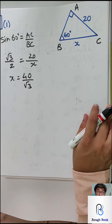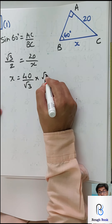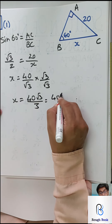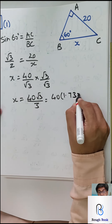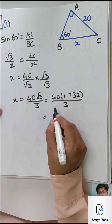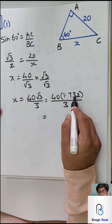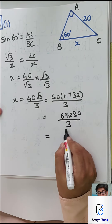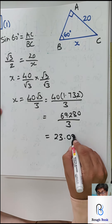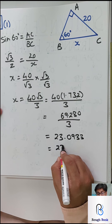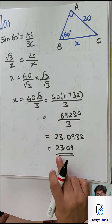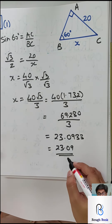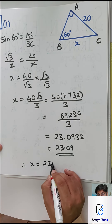You can't leave this as root 3 in the denominator, so you rationalize: multiply by root 3 over root 3, giving x equals 40 root 3 by 3. That will be 40 times 1.732 divided by 3 — which gives 69.28 divided by 3, so 23.09. The answer book has converted to one decimal: 23.1. Two decimal places is fine. Therefore x equals 23.09.